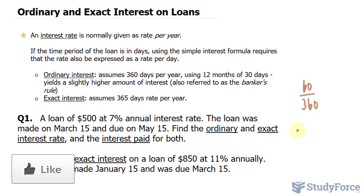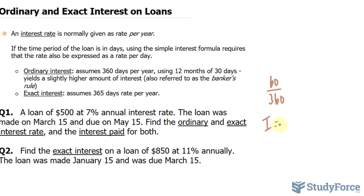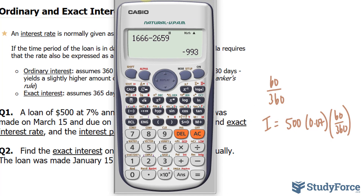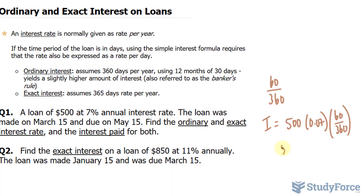Using the simple interest formula, interest equals the principal $500, times the rate 7% annually — we divide by 100% to get it as a decimal, 0.07 — multiplied by the time, in our case 60 over 360. Using our calculator, 500 times 0.07 times 60 over 360 gives us $5.83.